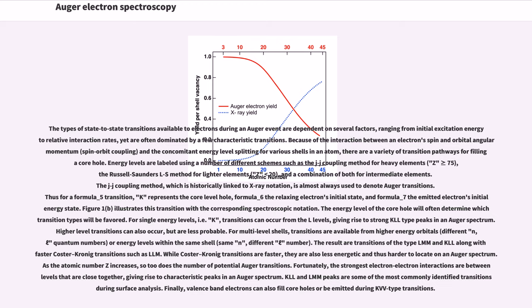The result are transitions of the type LMM and KLL along with faster Coster-Kronig transitions such as LLM. While Coster-Kronig transitions are faster, they are also less energetic and thus harder to locate on an Auger spectrum. As the atomic number Z increases, so too does the number of potential Auger transitions. Fortunately, the strongest electron-electron interactions are between levels that are close together, giving rise to characteristic peaks in an Auger spectrum.